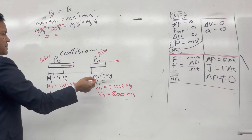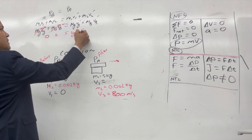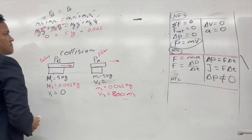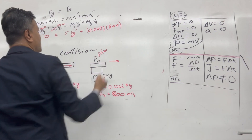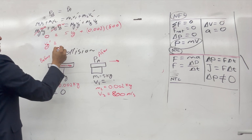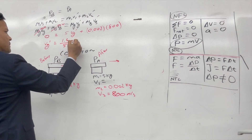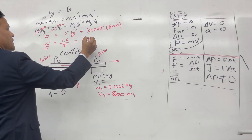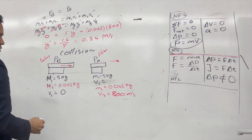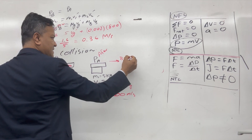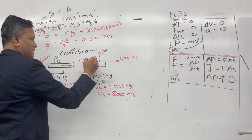Before firing, both gun and bullet are at rest, so total momentum is zero. After: mass of gun is 5 kg times velocity of gun (unknown) plus mass of bullet 0.002 kg times 800 meters per second. Solving, velocity of the gun equals 1.6 divided by 5, which is 0.32 meters per second. So the bullet moves at 800 meters per second, while the gun recoils at approximately 0.32–0.36 meters per second.